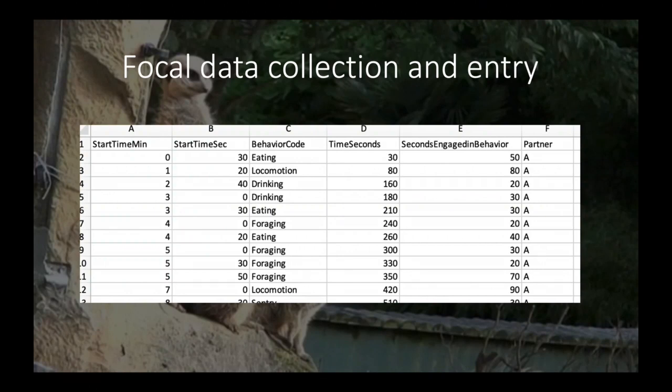The field lab and computer lab this week are interrelated, and you are going to be using data that you collect for the field lab in the computer lab. When you go through this the first time taking your focal data, feel free to set a timer, and every time you see Bumble engage in one of the behaviors in your ethogram, write down the start time. Then you can go back and fill out the table.